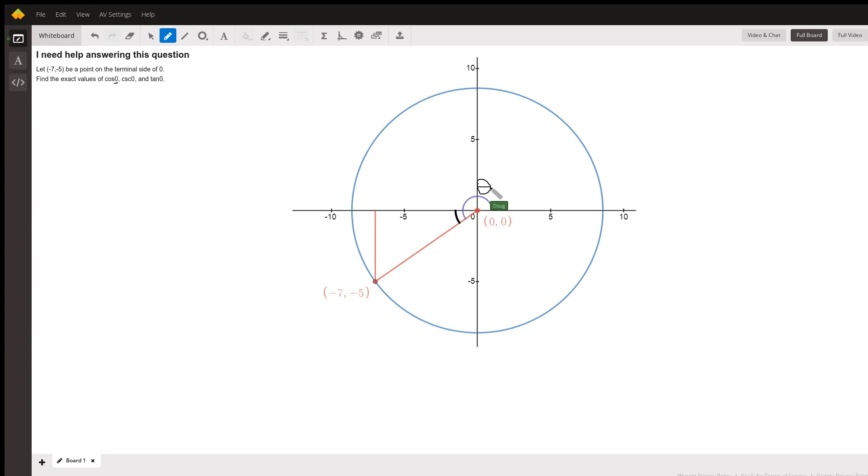If we drop a perpendicular from the point negative seven, negative five to the x-axis, then we call this angle right here the reference angle. Any trig functions of the reference angle will have the same values as the trig functions for the angle theta.